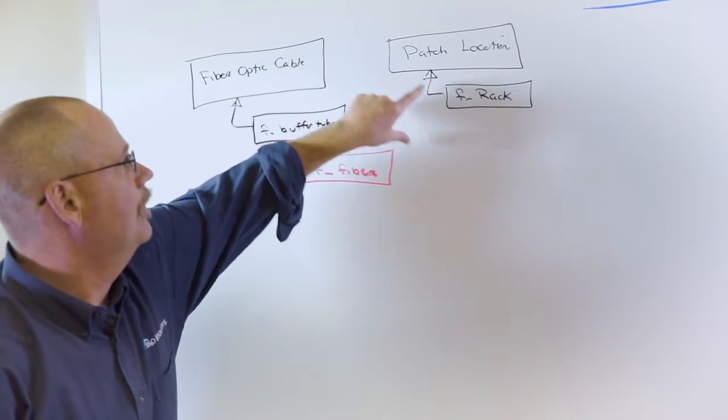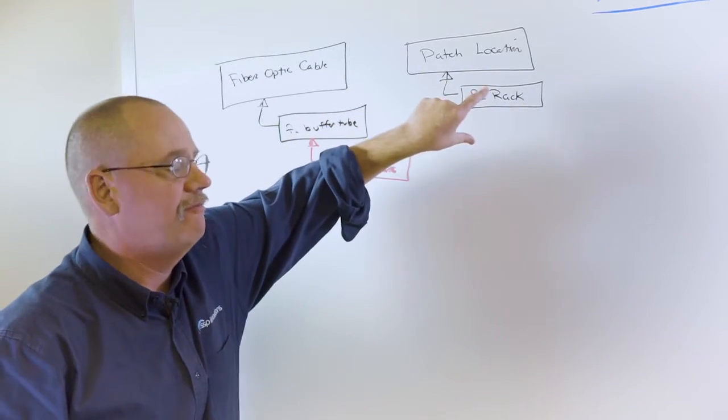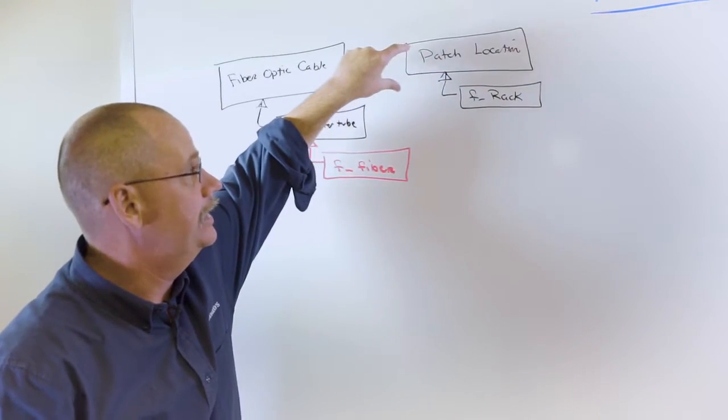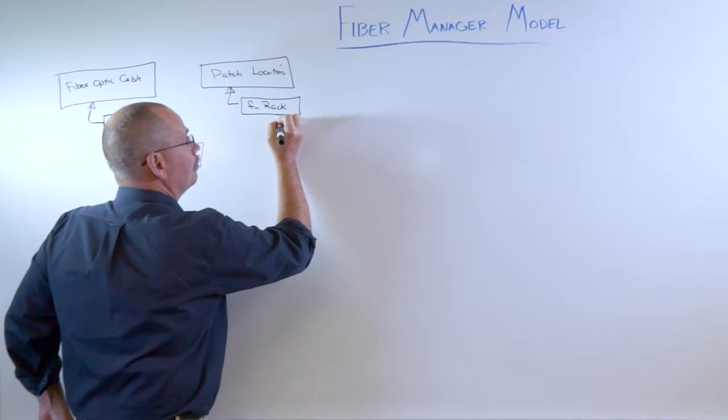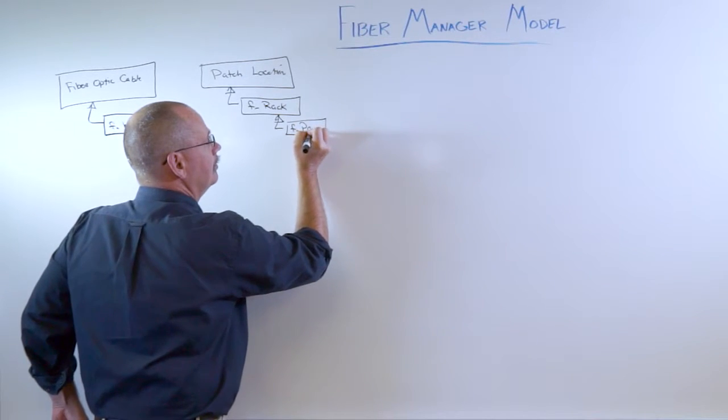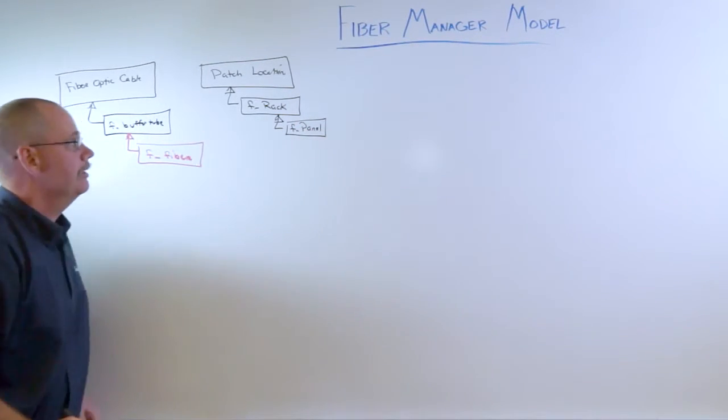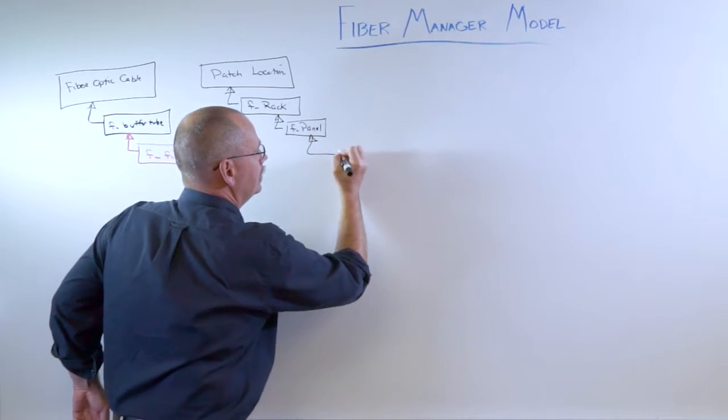Again when I'm drawing these are representing relationships in a one-to-many. We can have multiple racks inside the same patch location. A child of the rack is the panel.